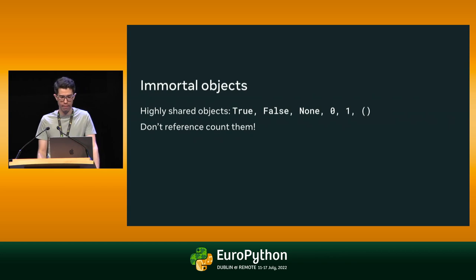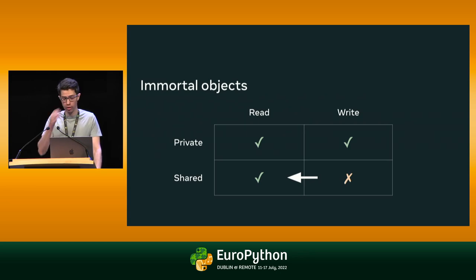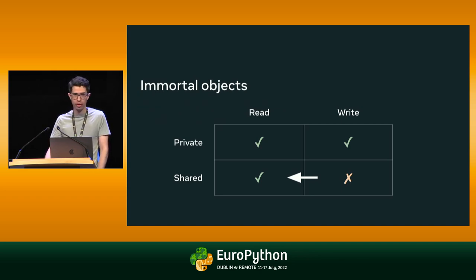Immortal objects aren't a new idea — they're used in Swift as well as some alternate Python implementations like Cinder and Piston. They work because we've transformed writes to shared data into read-only accesses — going from modifying the reference count fields of objects like None, True, and False to only reading that field to check if the object is immortal. For single-threaded code, immortal objects aren't a clear win because the cost of the extra branch to check is typically higher than the work saved. At the language summit in April, Eddie Elizondo and Eric Snow presented an implementation of immortal objects with smaller costs, so we might see them in CPython independent of any GIL changes.